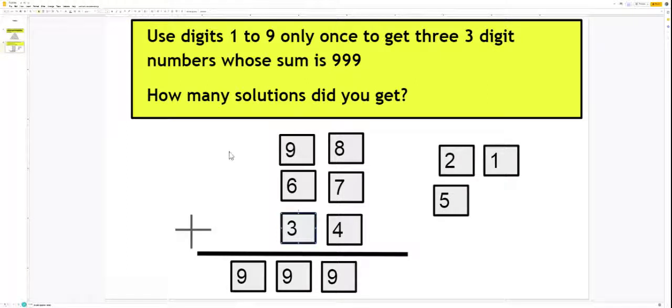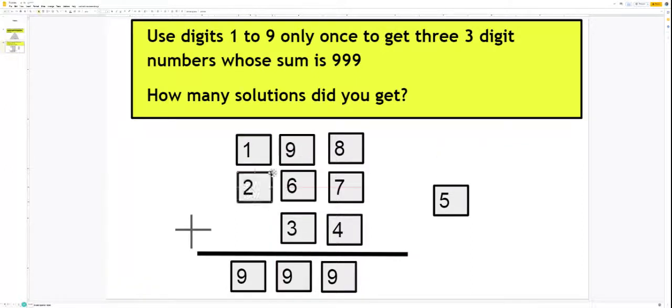So we write 9 and 1 is again carried. So here you can see that you can have the numbers. I can have the number 198, I can have 267, and then 534. So you add and see what is the sum of these 3-digit numbers.